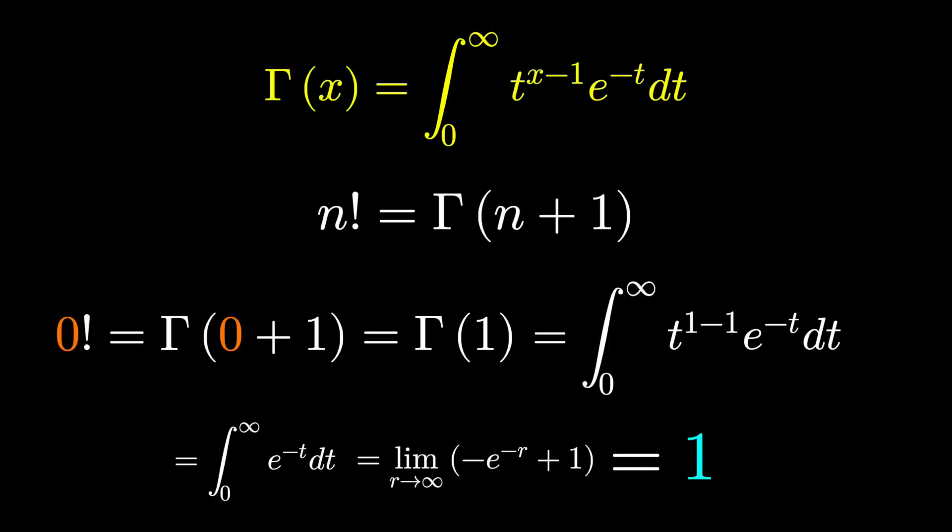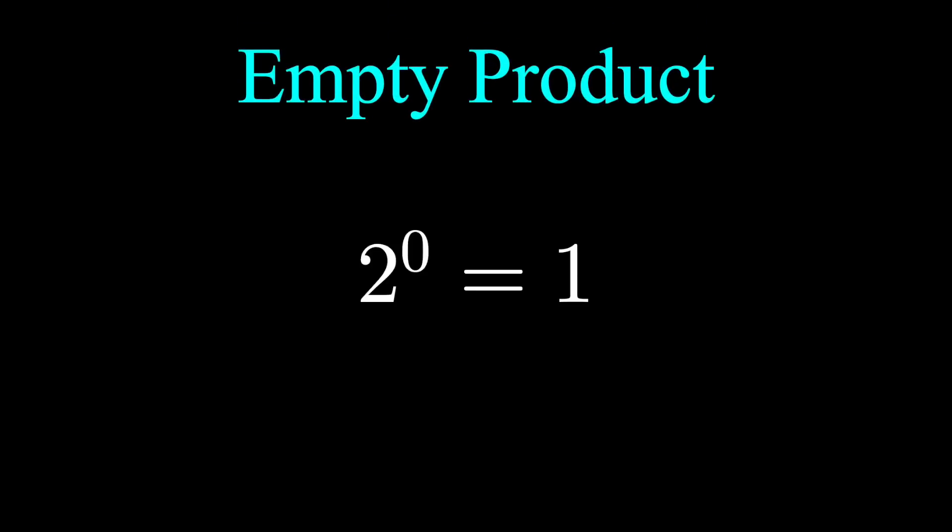A more subtle reason we should define 0 factorial to be 1 is for the same reason we define a number to the 0 power to be 1. This is called an empty product, the product of nothing at all. This is essentially the neutral element of multiplication, which is 1. The neutral element of addition is 0, and so if we were to define 0 factorial as that, we might mess some things up.